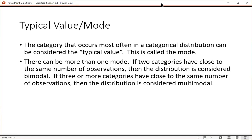The category that occurs most often in a categorical distribution can be considered the typical value. We call this the mode. There can be more than one mode if two categories have close to the same number of observations, so they don't need to be exactly the same but close, then the distribution is considered bimodal. If three or more categories have close to the same number of observations, then the distribution is considered multimodal.